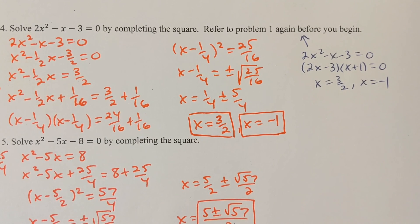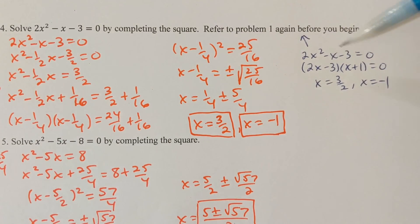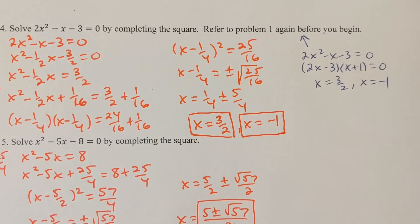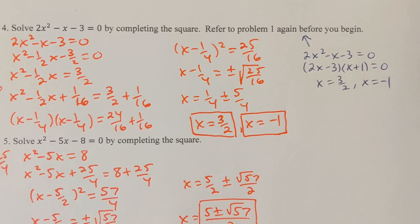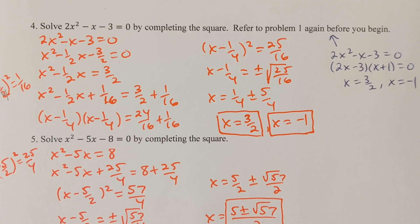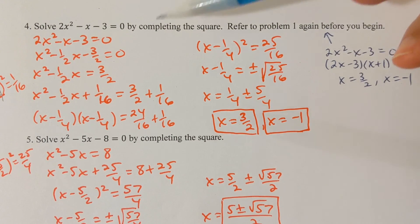The problem I just showed you is not a great example for showing you why we complete the square. It's a great example to show you how to complete the square. Obviously if I were given the choice, I wouldn't use this method — I'd just factor, I can get the answer in five seconds.